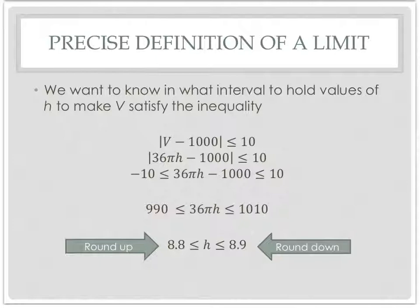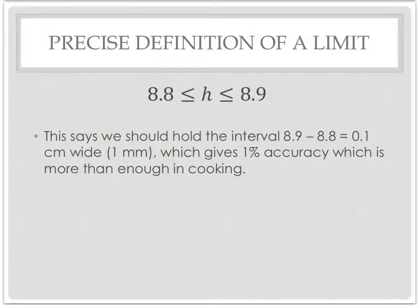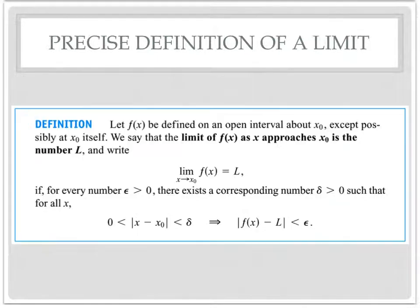Notice I say round up and round down. Hopefully that kind of makes sense to you, because if this is my target, I'm going to be a little bit above it and a little bit below it. If I round this up and round this down, it makes that gap even closer. That gives me a little bit more precision. What this means is we should hold this interval, the 8.9 minus 8.8 equals 0.1 centimeters wide or about one millimeter, which is the lines on a measuring cup, which gives 1% accuracy, which for most people is good enough in cooking. What we just did is the precise definition of a limit.